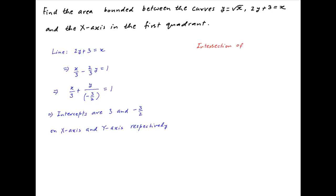Now we look for the points of intersection of the parabola and the line. Then, substitute the value of x from the equation of the parabola into the equation of the line. We get 2y plus 3 is equal to y square. This implies that y square minus 2y minus 3 is equal to 0.